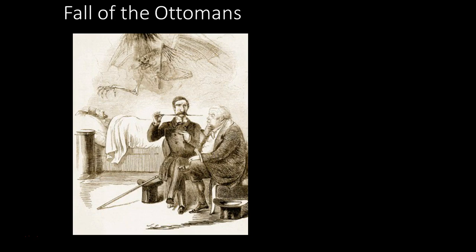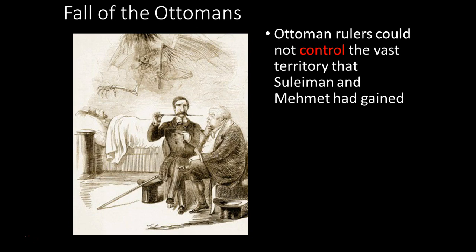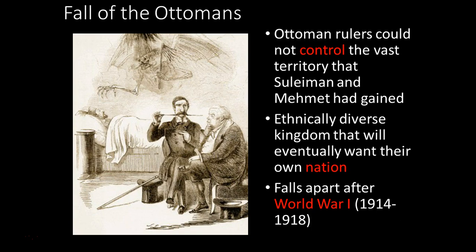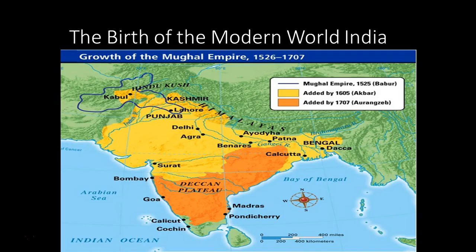The Ottomans won't fall until World War One. Their empire controls the Balkans where many Christians live, and those Christians eventually want to rebel and reclaim their land. It's such a diverse place that it collapses under its own weight — similar to the Yuan Dynasty. Before World War One, the Ottoman Empire is called 'the sick old man of Europe' because it was a sick and dying empire that collapses following the First World War.